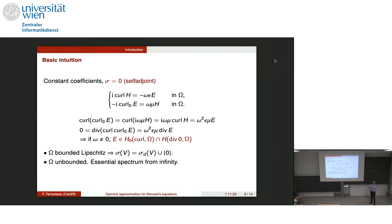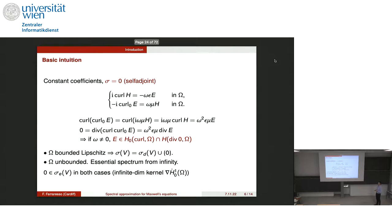If the domain is unbounded, the situation is more complicated: you have to account for essential spectrum coming from infinity. In the whole space, for example, the essential spectrum is the entire real line. Other behaviors such as bandgap structures are also possible. What is important to note is that in both cases, zero is always in the essential spectrum, because for omega equal to zero, any gradient field satisfies the equation — so zero is an eigenvalue of infinite multiplicity.